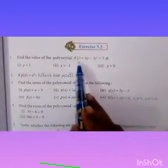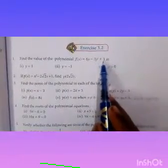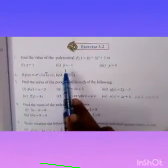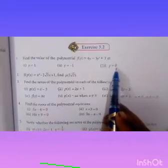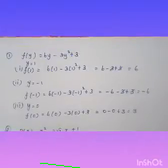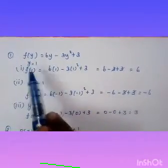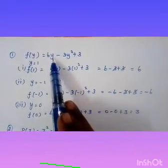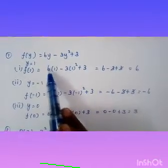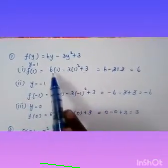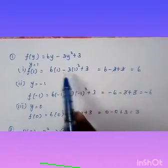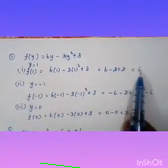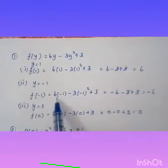First problem: find the value of the polynomial f of y equals 6y minus 3y squared plus 3, substituting y equals 1, y equals minus 1, and y equals 0. For y equals 1: f of 1 equals 6 into 1 minus 3 into 1 squared plus 3 equals 6 minus 3 plus 3 equals 6.